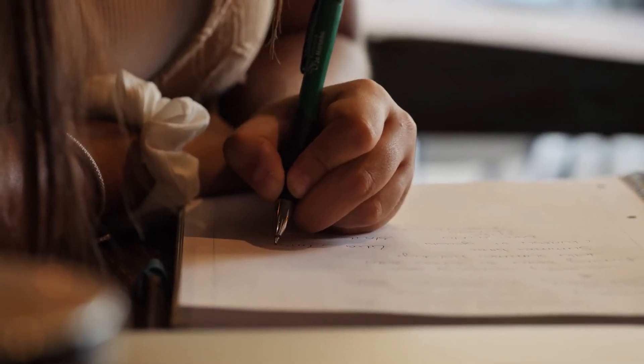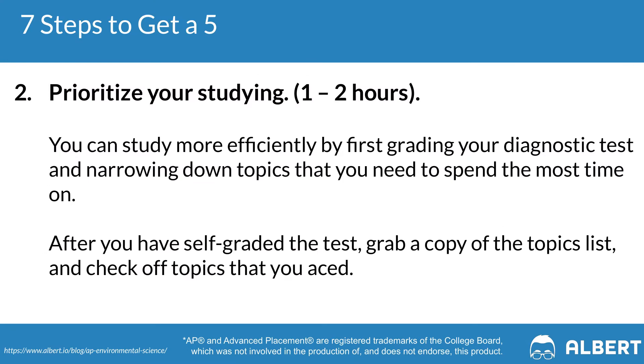Step number two is to prioritize your study time. This will take you about one to two hours. The purpose of this step is to look at your diagnostic test, review what you got wrong and what you got right, and then figure out where your weaknesses were and isolate which topic areas they mostly fall in. From there, you'll be able to figure out which topics you need to spend more time on in your review.